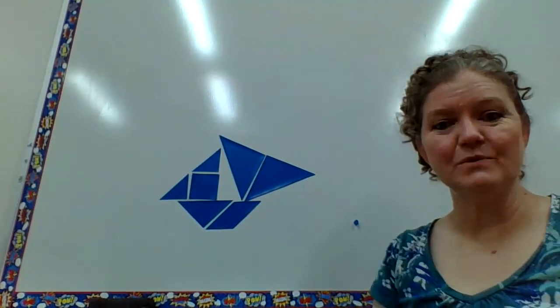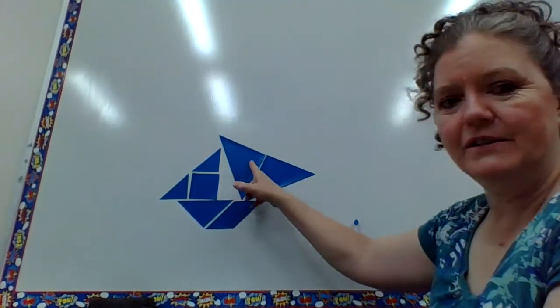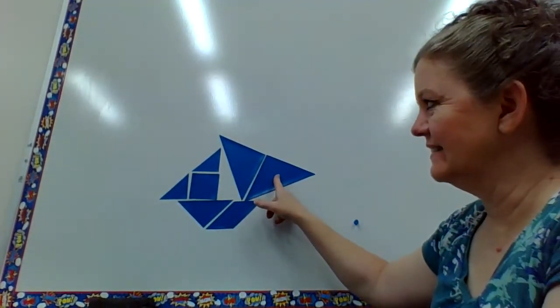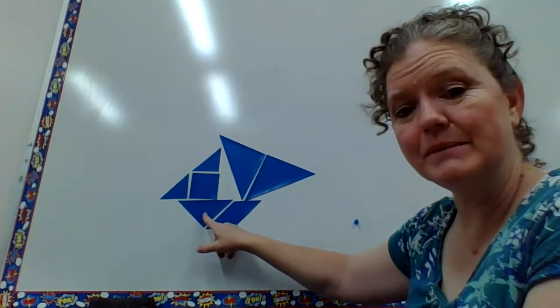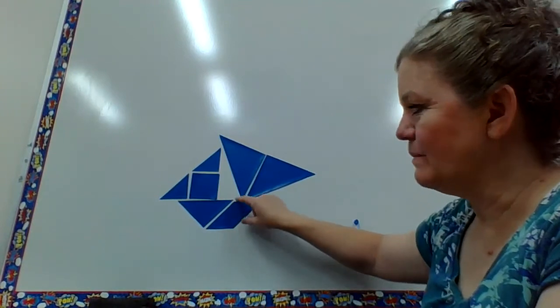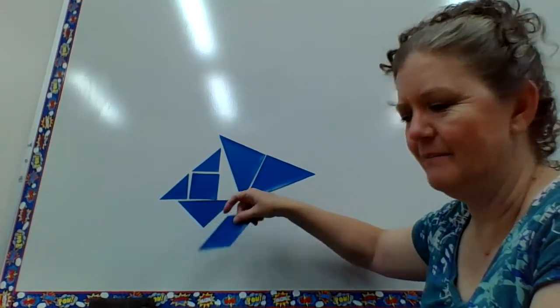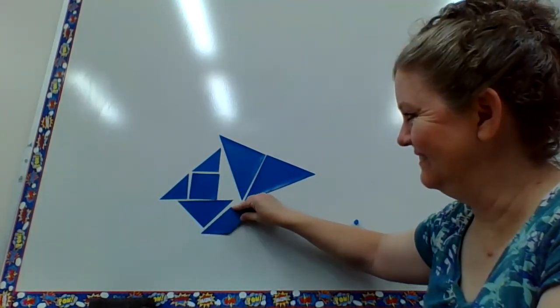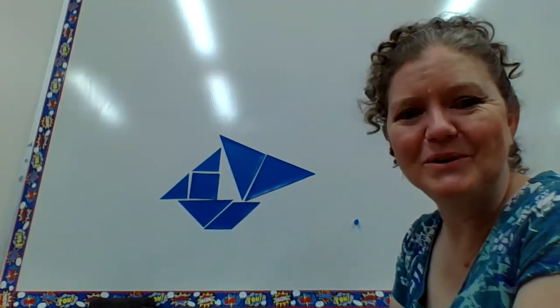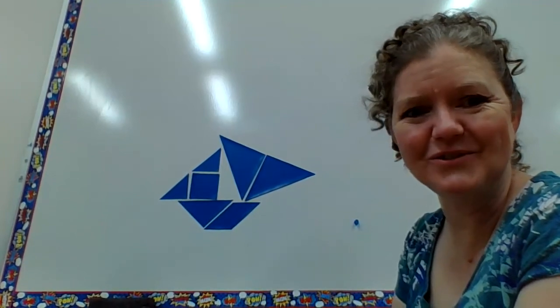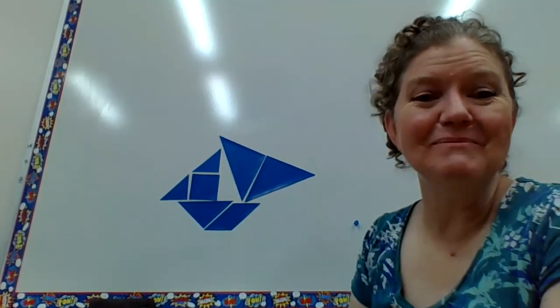All right, let's review those shapes. Remember, there's two large triangles, two small triangles, a square, the medium-sized triangle, and this one is a parallelogram. Look at that. Thank you for joining me. I hope you have fun making all kinds of shapes with tangrams. Bye.